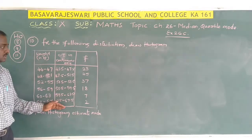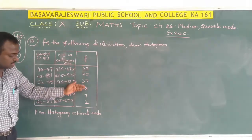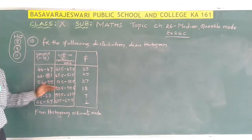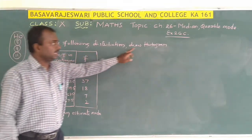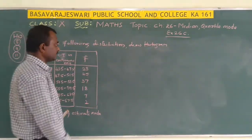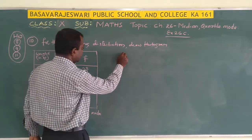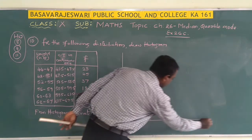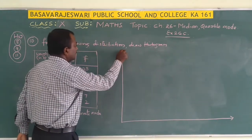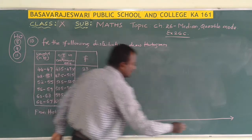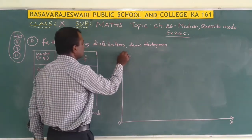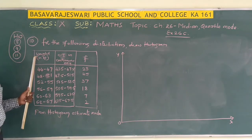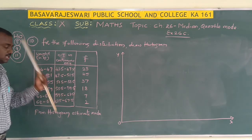So in continuous form, the corresponding frequency is also given. After completing this frequency distribution you have to draw the histogram. We will draw the histogram using the graph sheet. Draw the x-axis and y-axis. Along the x-axis we have to take the weight in continuous form.